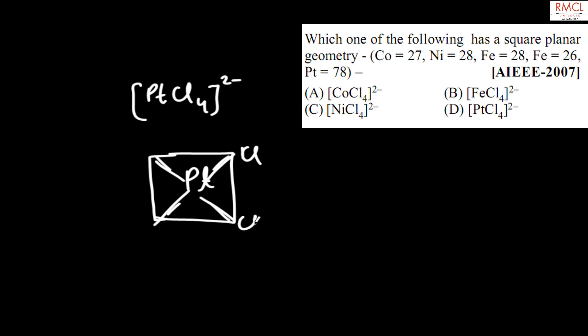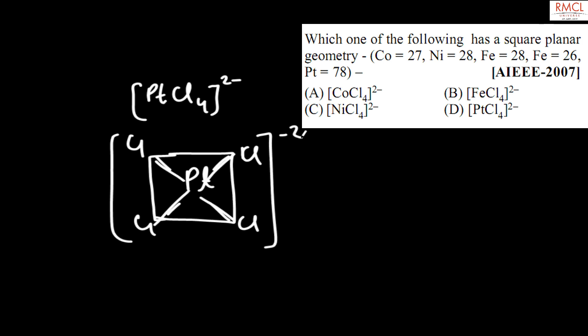Because for four-coordinate complexes, the four Cl ligands are arranged about the central platinum atom in a square planar configuration. So option D is correct for this question.